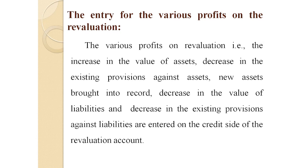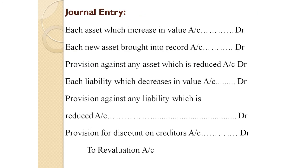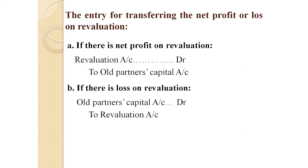The second entry is for various profits on revaluation. The various profits on revaluation — that is, increase in the value of assets, decrease in existing provisions against assets, new assets brought into record, decrease in the value of liability, and decrease in existing provisions against liabilities — are entered on the credit side of the revaluation account. The journal entry is: Each asset which increases in value Dr., each new asset brought into record Dr., provisions against any asset which is reduced Dr., each liability which decreases in value Dr., provisions against any liability which is reduced Dr., provision for discount on creditors Dr. — to Revaluation Account.